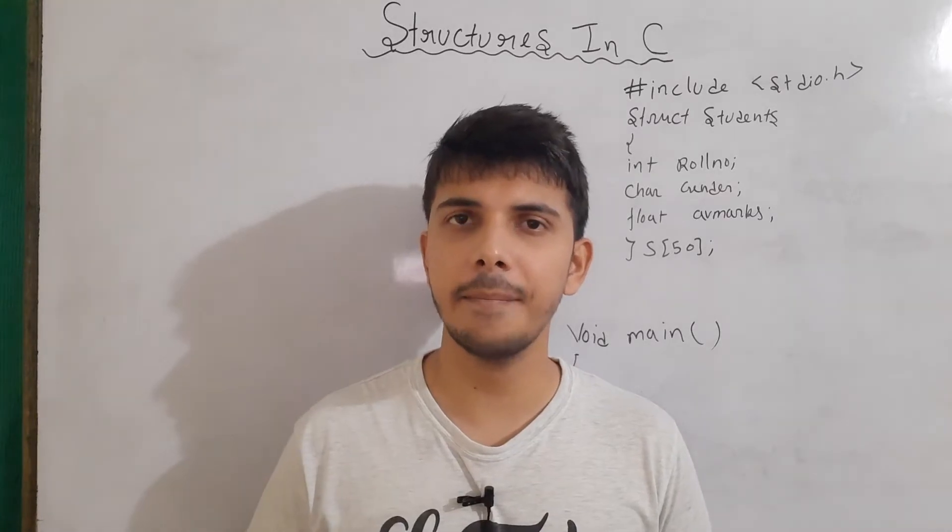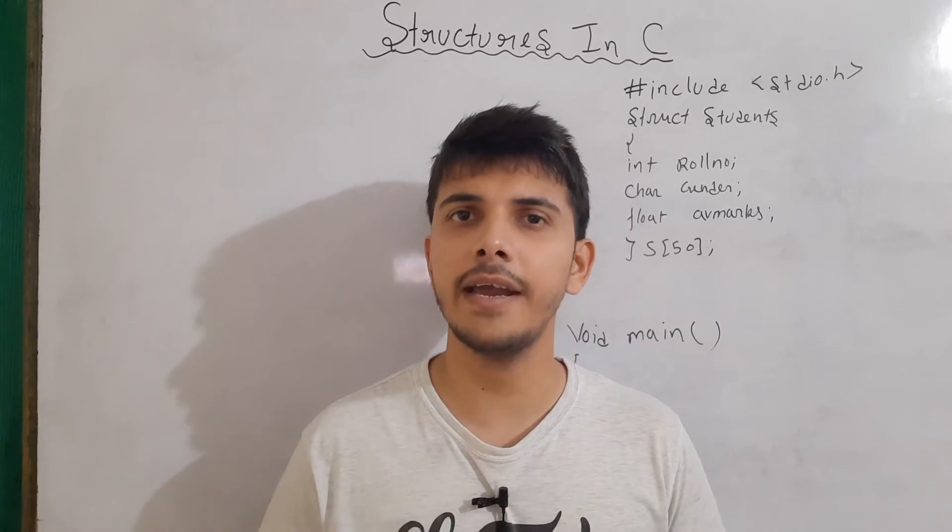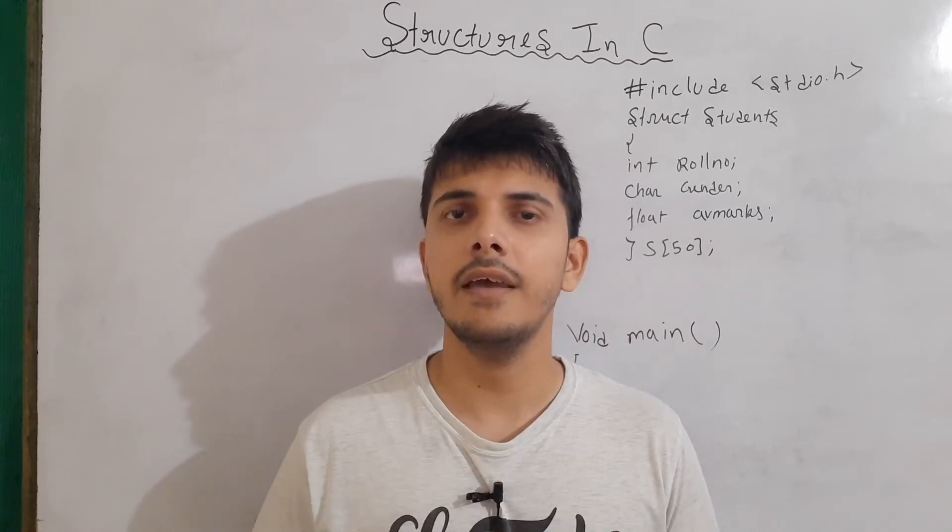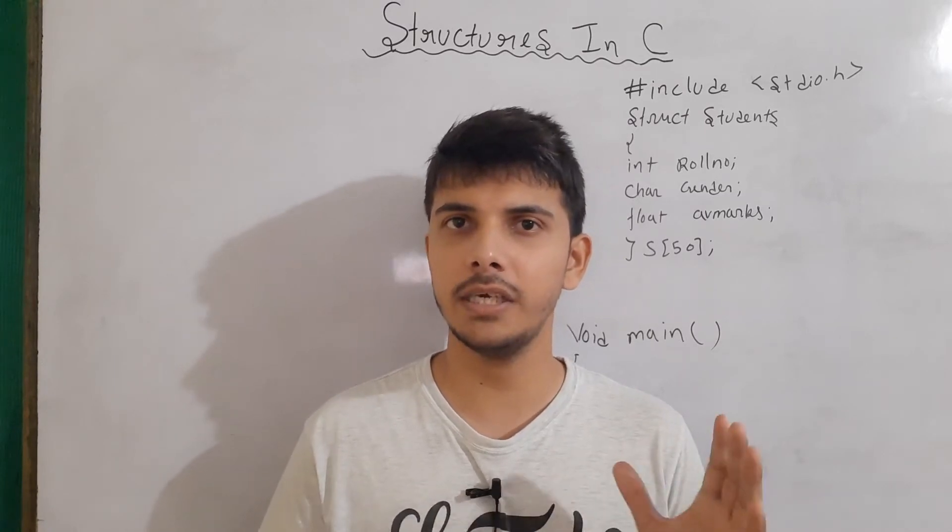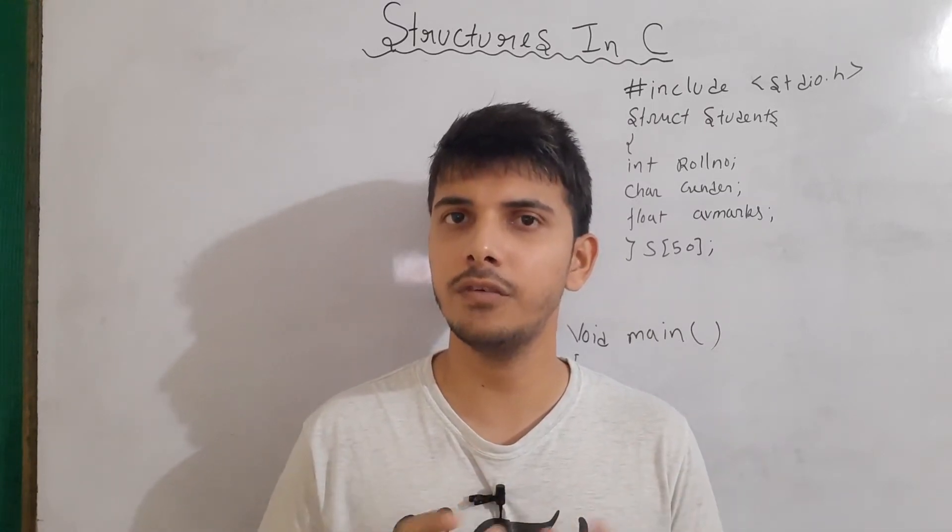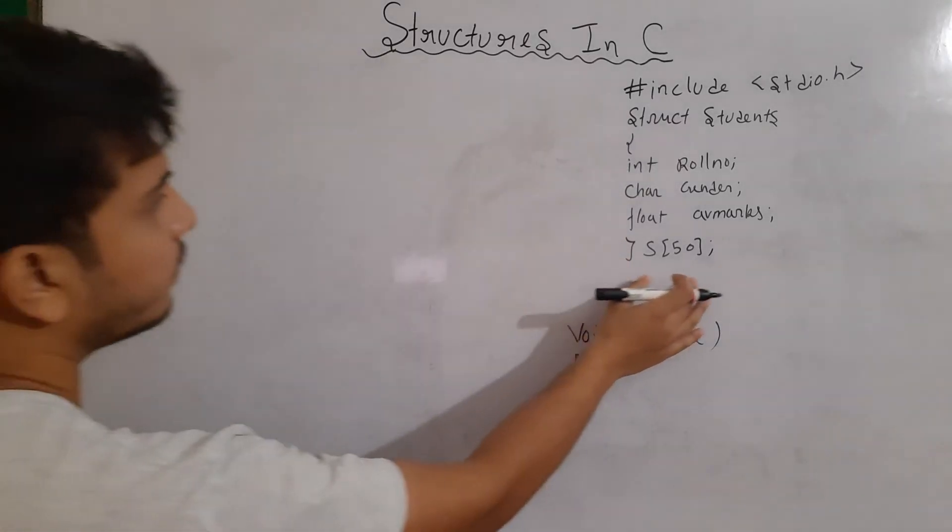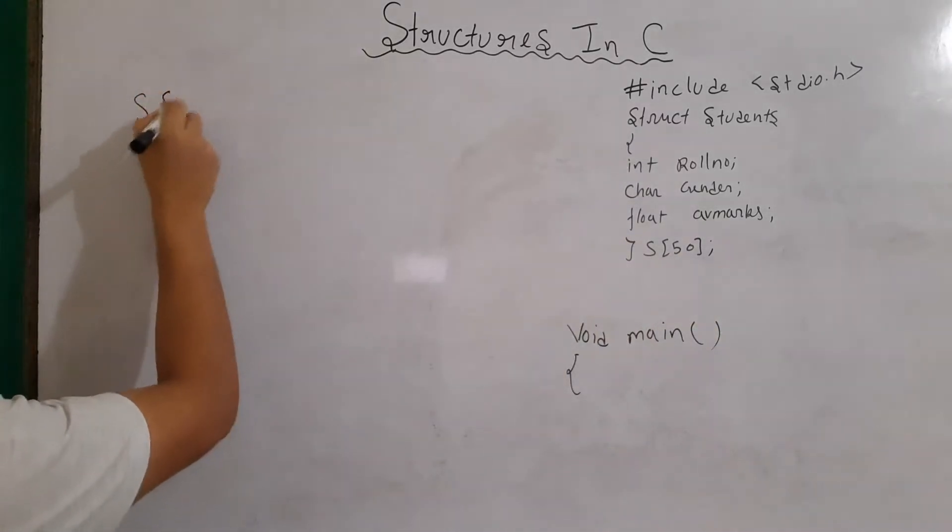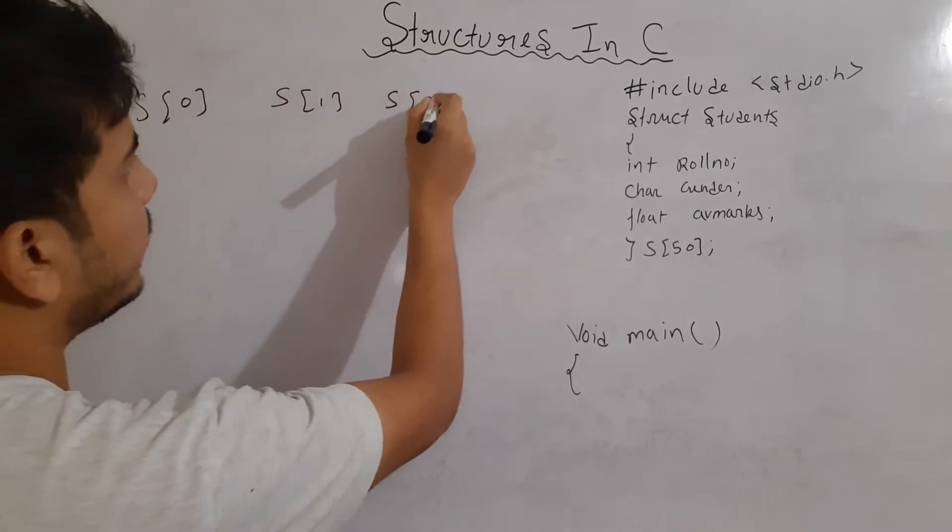Let's take an example in which our program is storing the information of 50 students. We need to make a function in which when somebody sends it a role number, then based on their role number, the student information should be shown. For example, let's say there are 50 students. So, S0 will be holding some values, then S1, then S2 and so on.